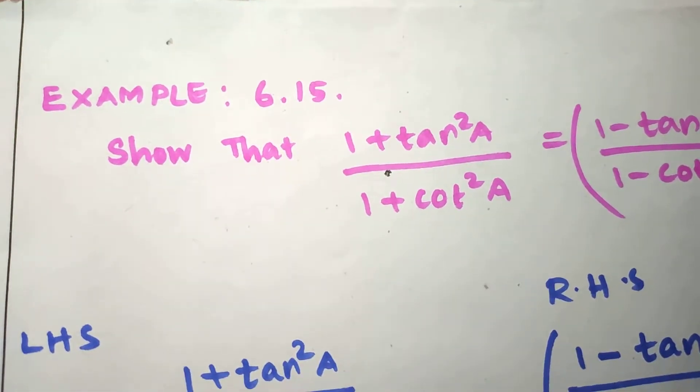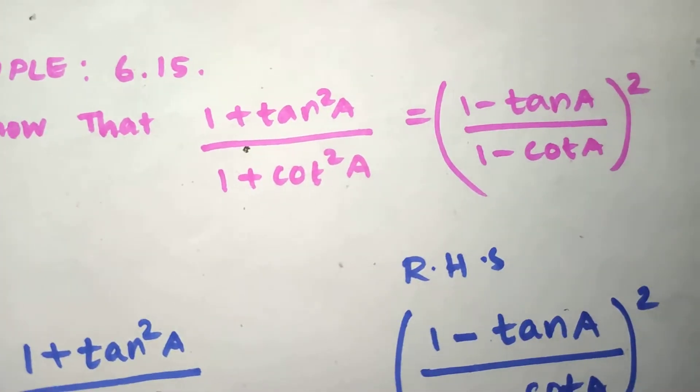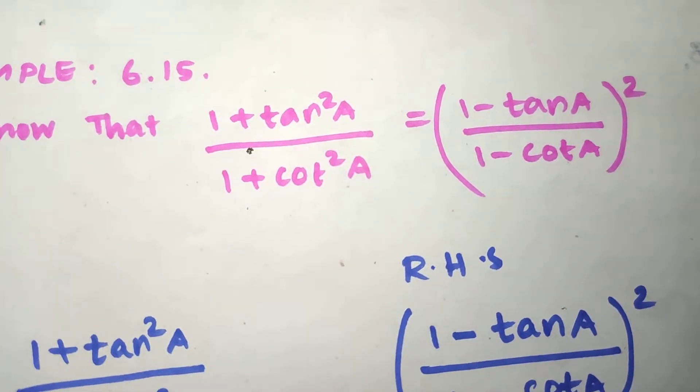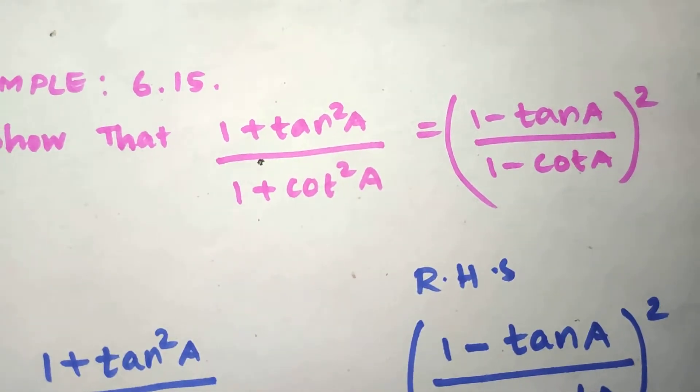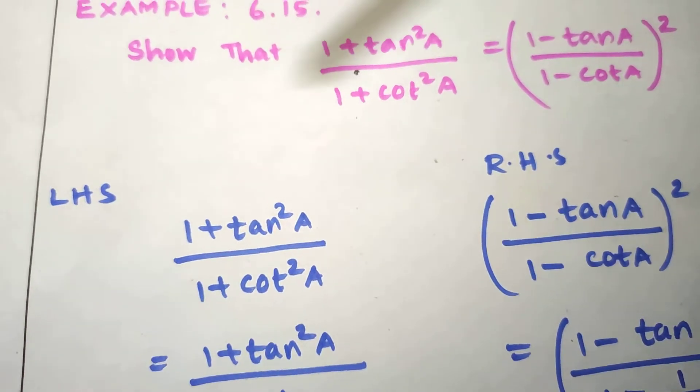In example 6.15, show that (1 + tan²A)/(1 + cot²A) equals ((1 - tanA)/(1 - cotA))². So in terms of the same way, you can see...